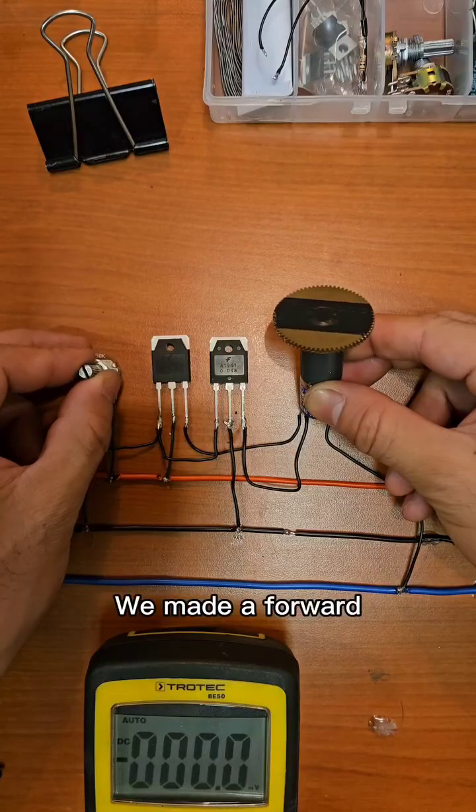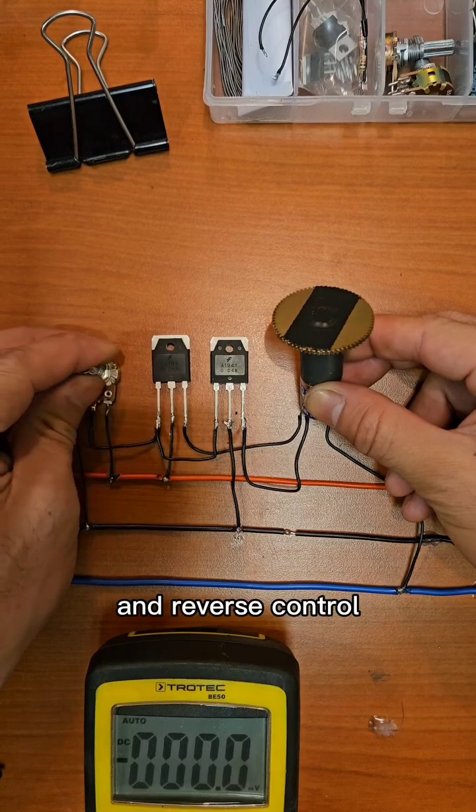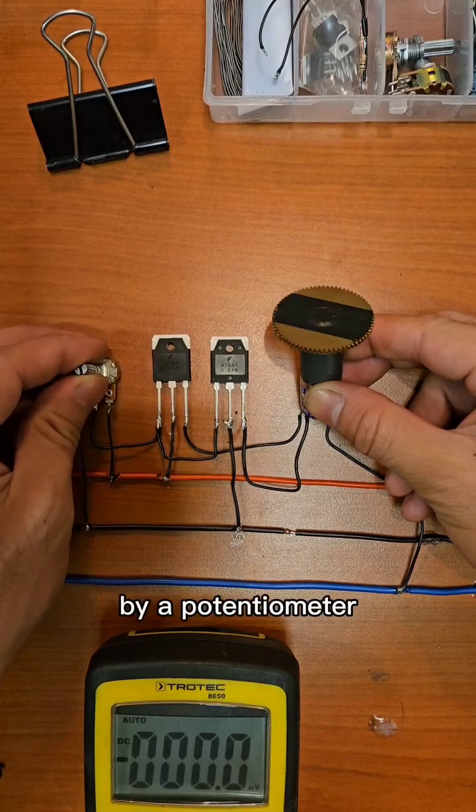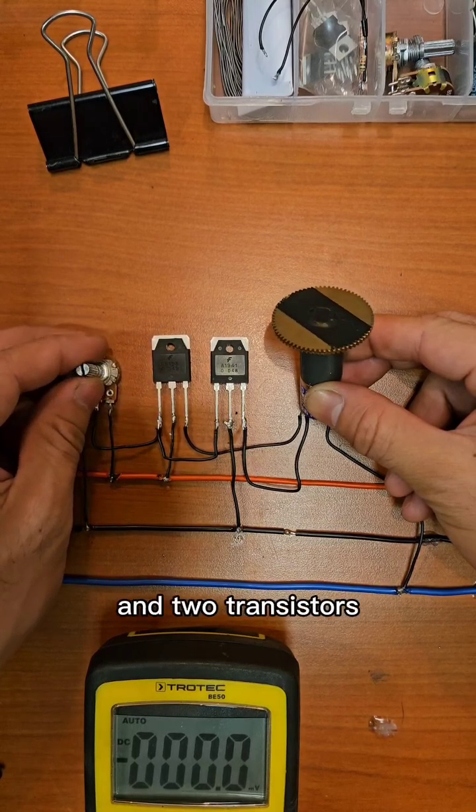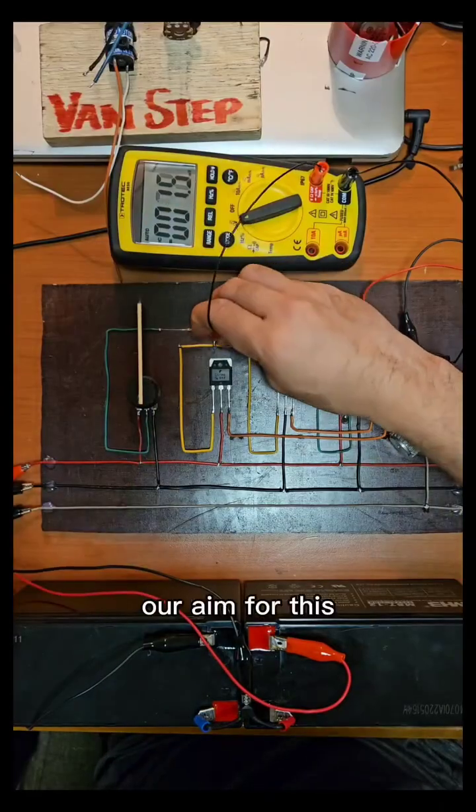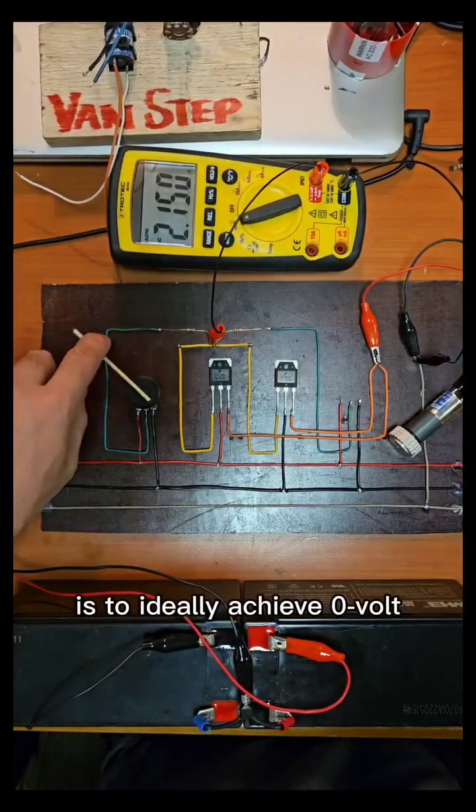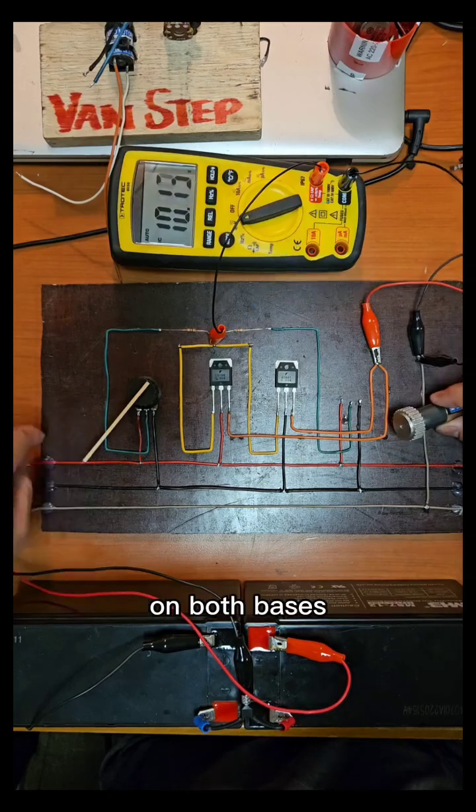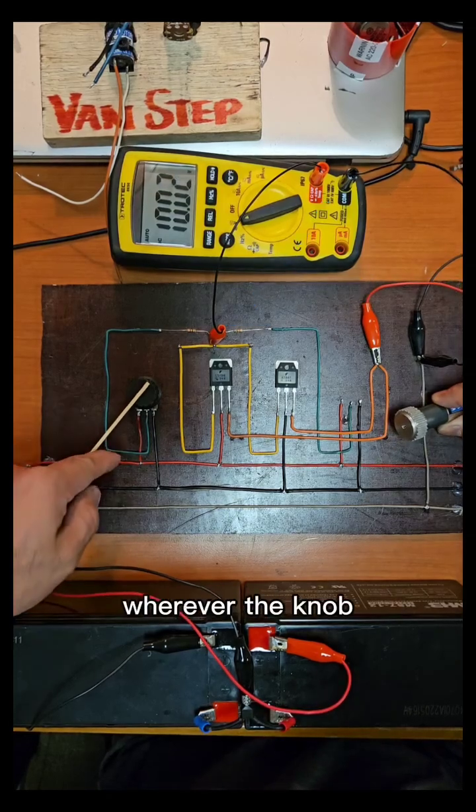From the last video, we made a forward and reverse control of a DC motor by a potentiometer and two transistors. Now, our aim for this demonstration is to ideally achieve zero volt on both bases of the transistors wherever the knob of the pot is positioned, so the motor will also stop.